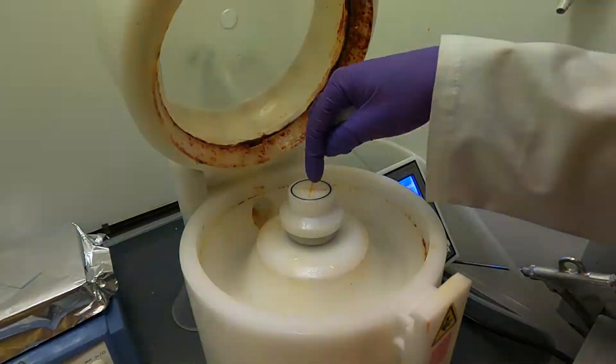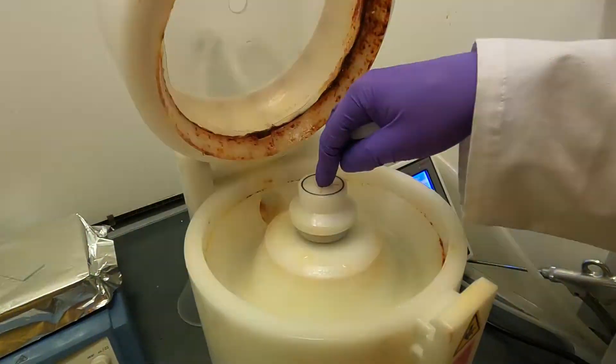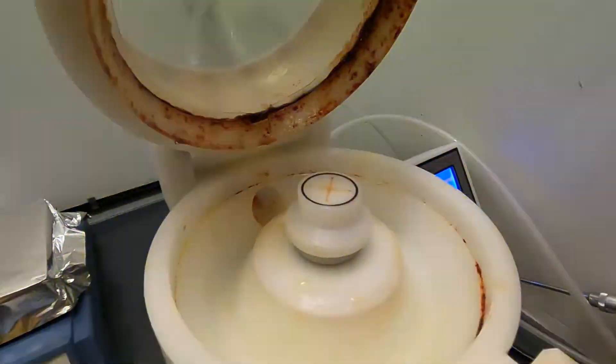The way that the sample is attached to the chuck itself is through this hole here which is connected to a vacuum pump which we have below the bench.